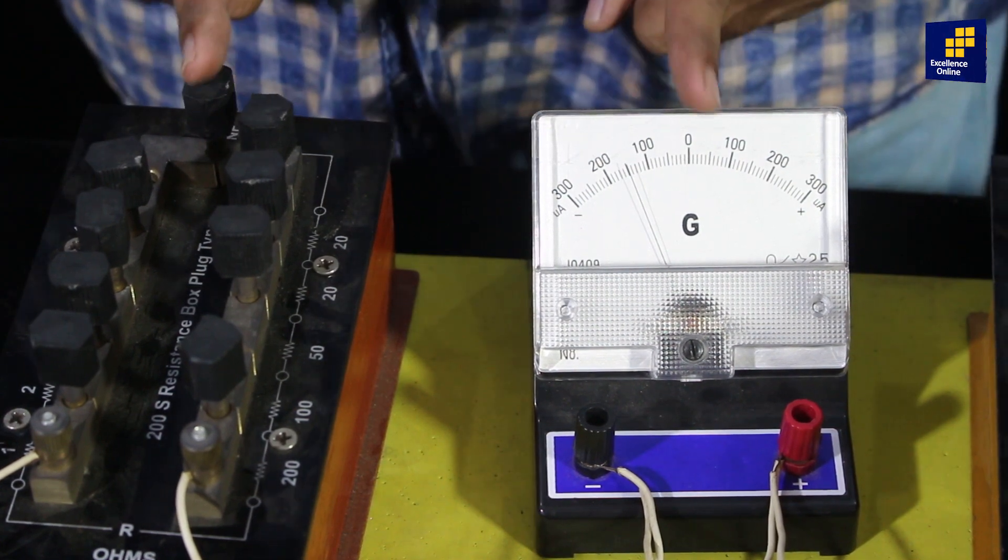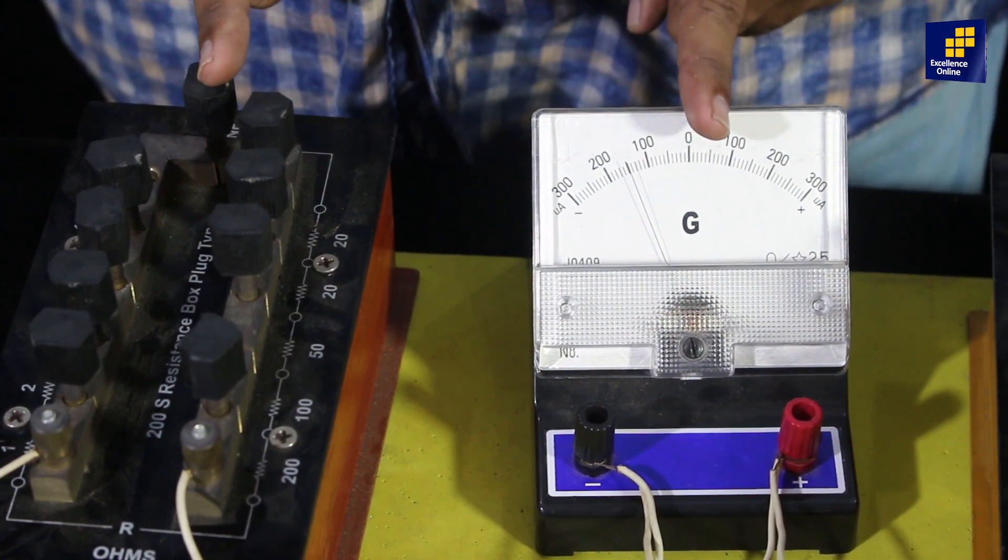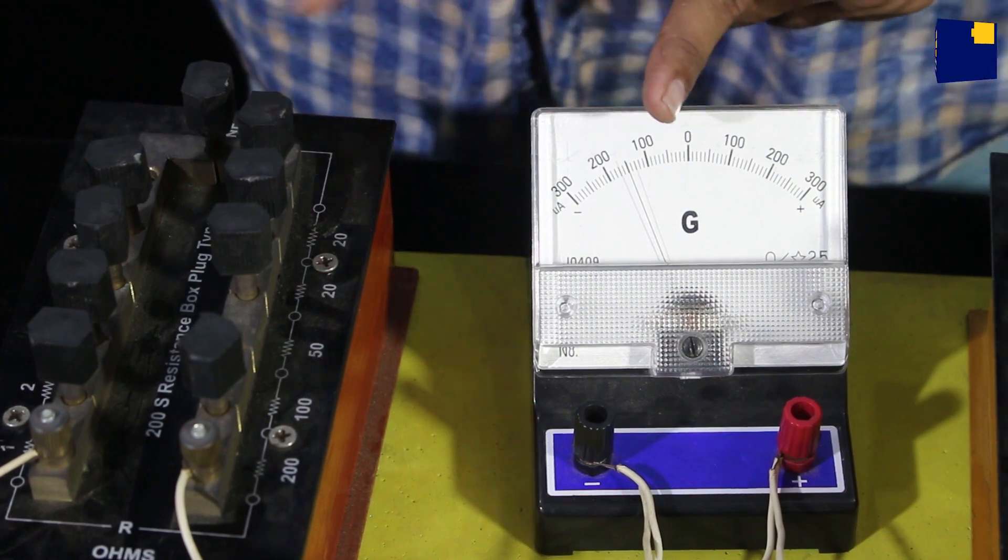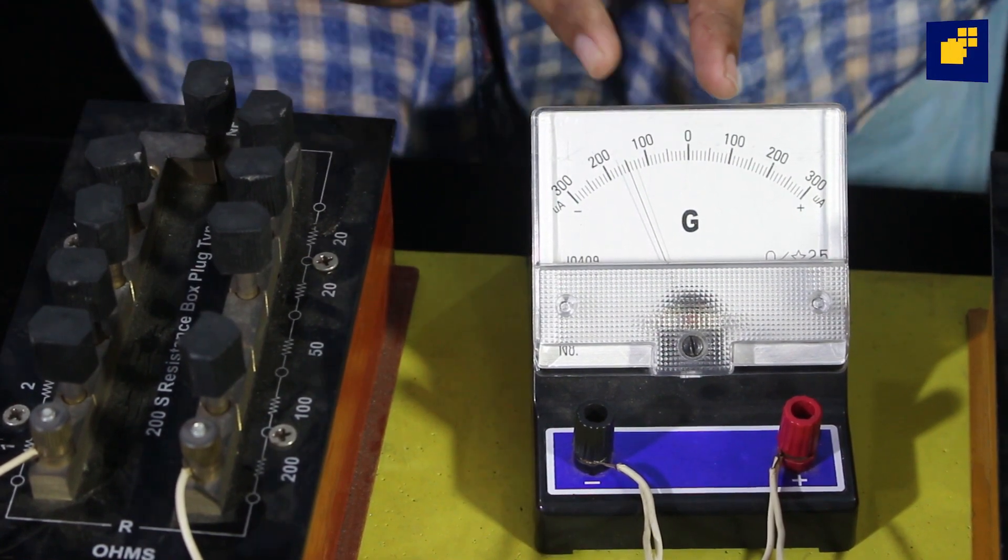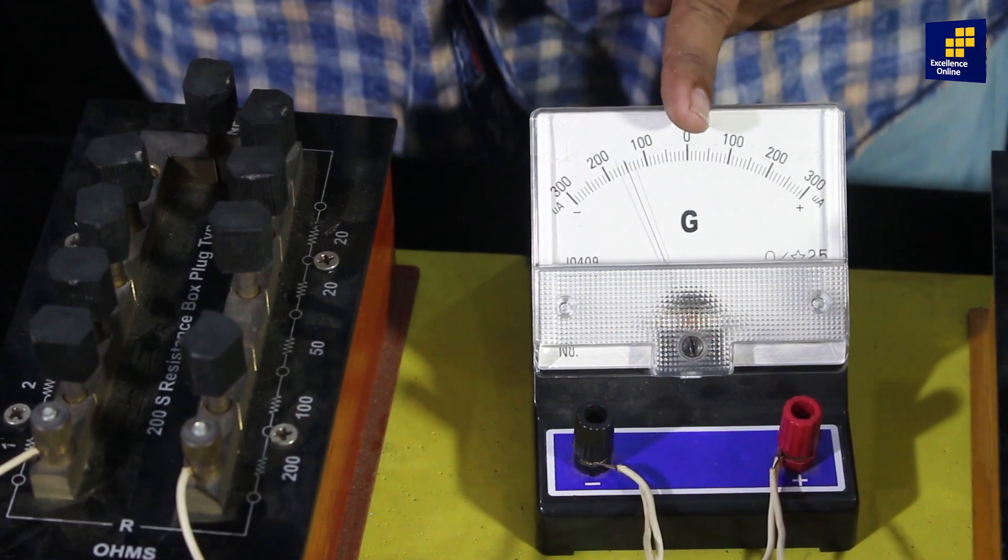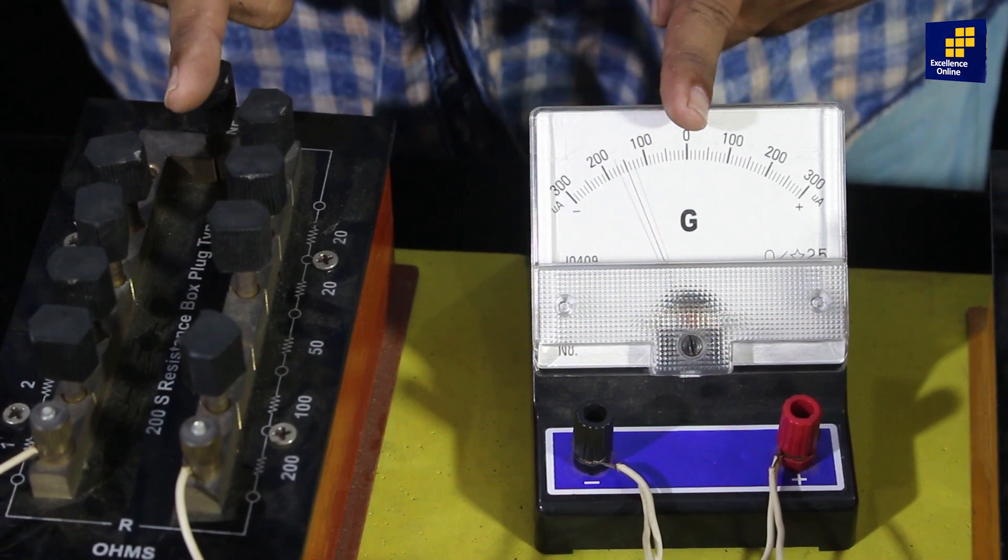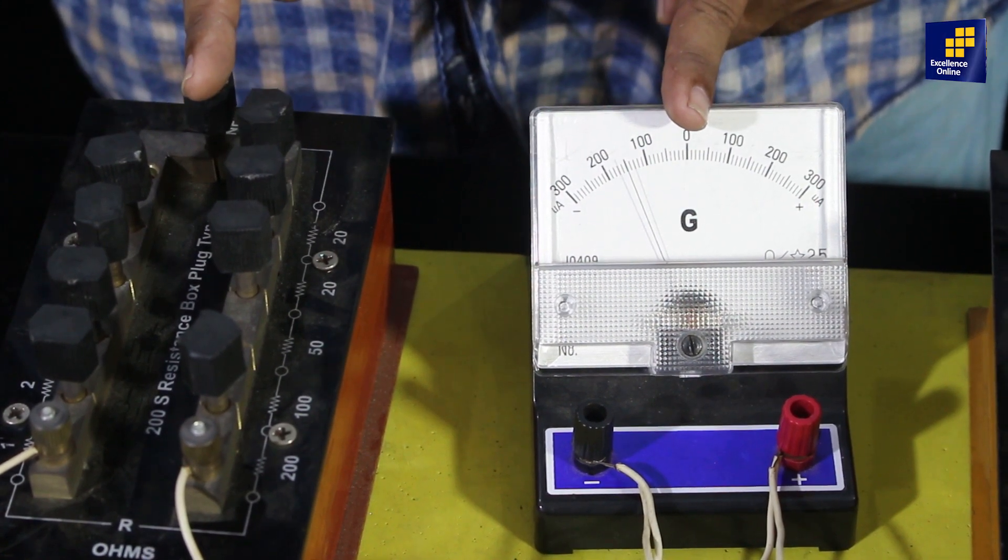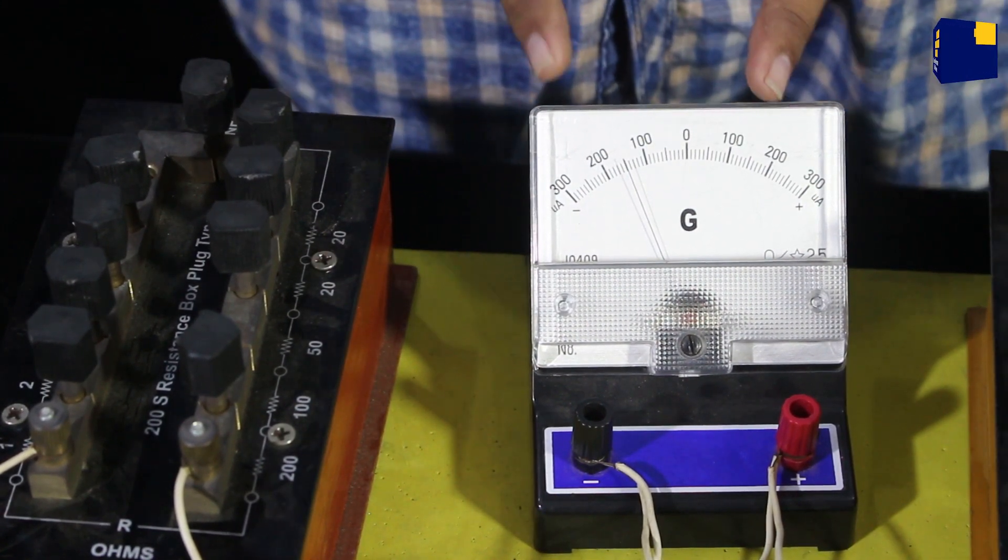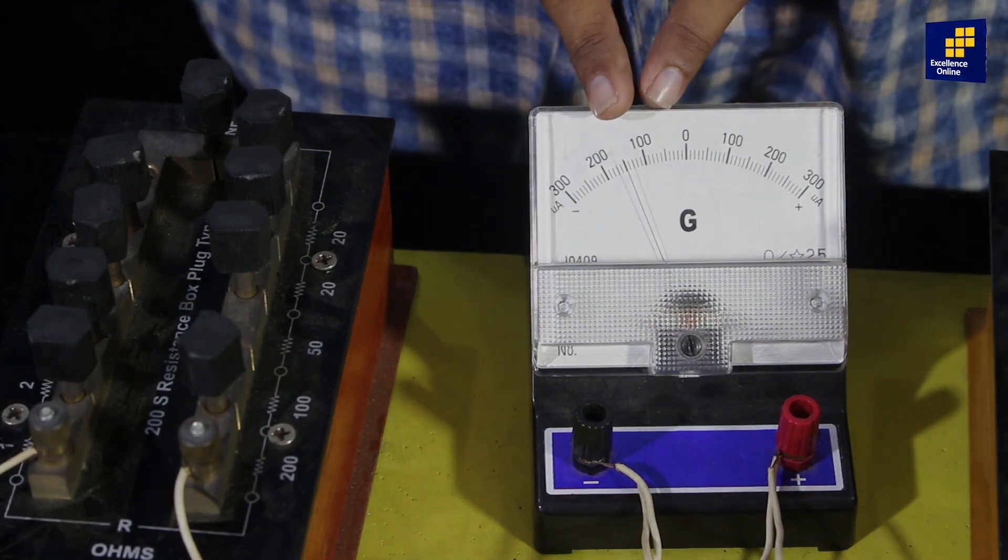अगर current इन दो parallel resistances में half हो जाए, it means कि both the components, resistance of galvanometer's coil, and the resistance connected in parallel, इस resistance box जो कि parallel में connected है, इन दोनों की resistance equal होगी, and that will be equal to 110 ohm.